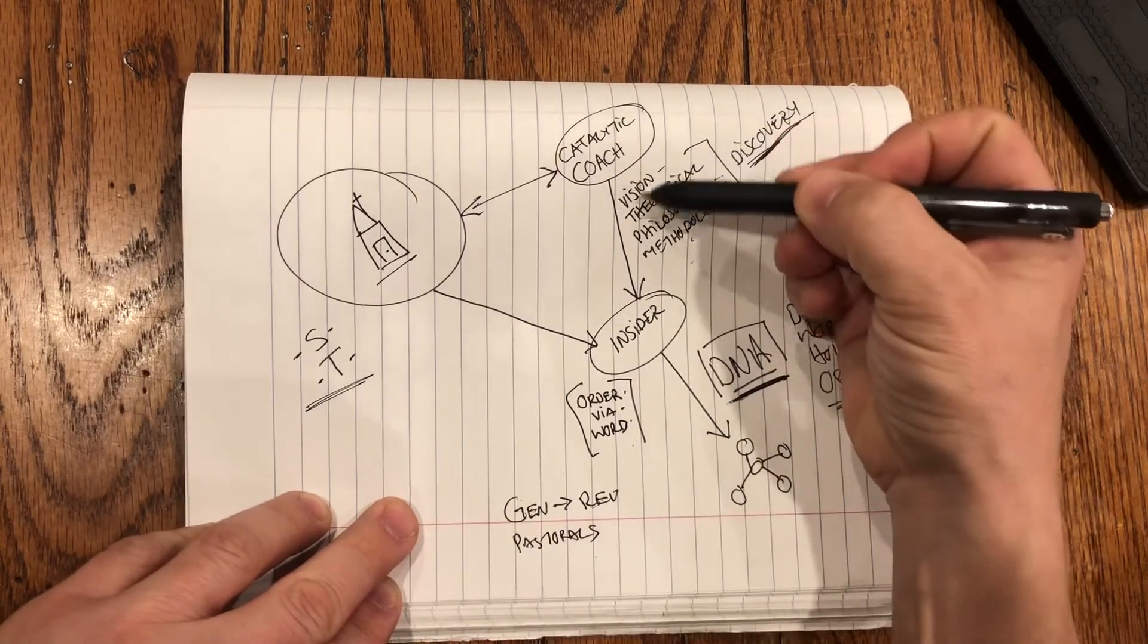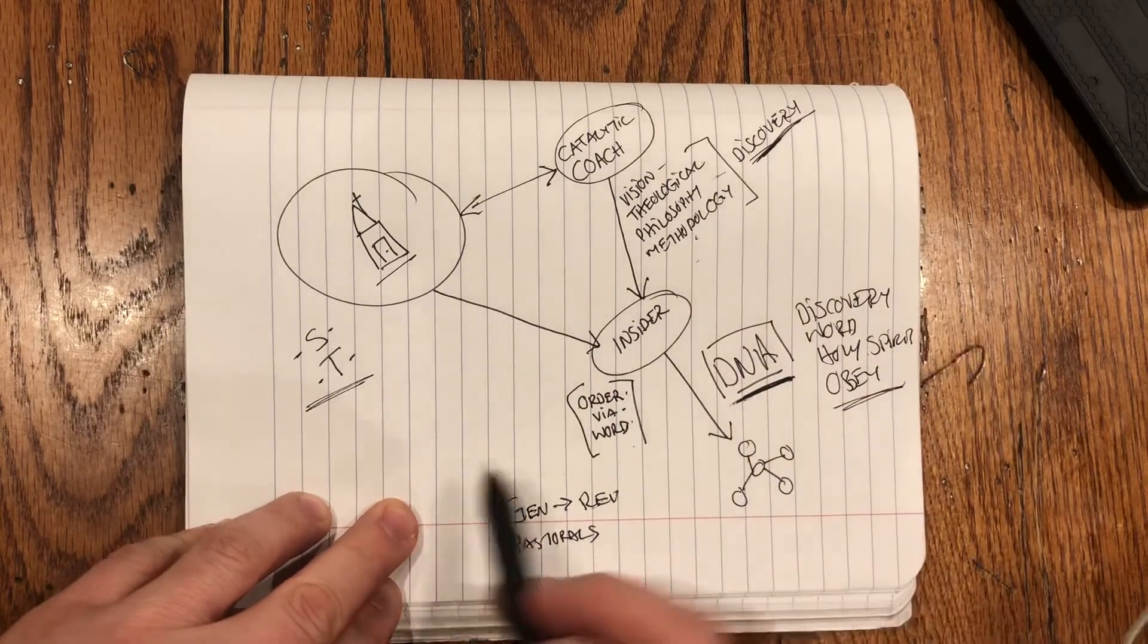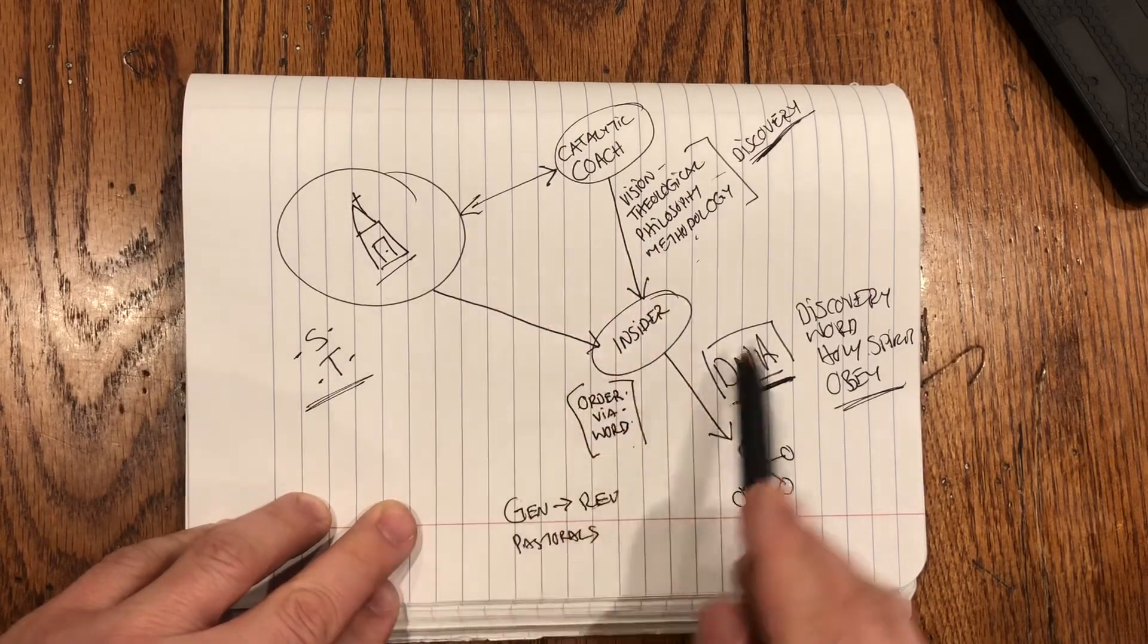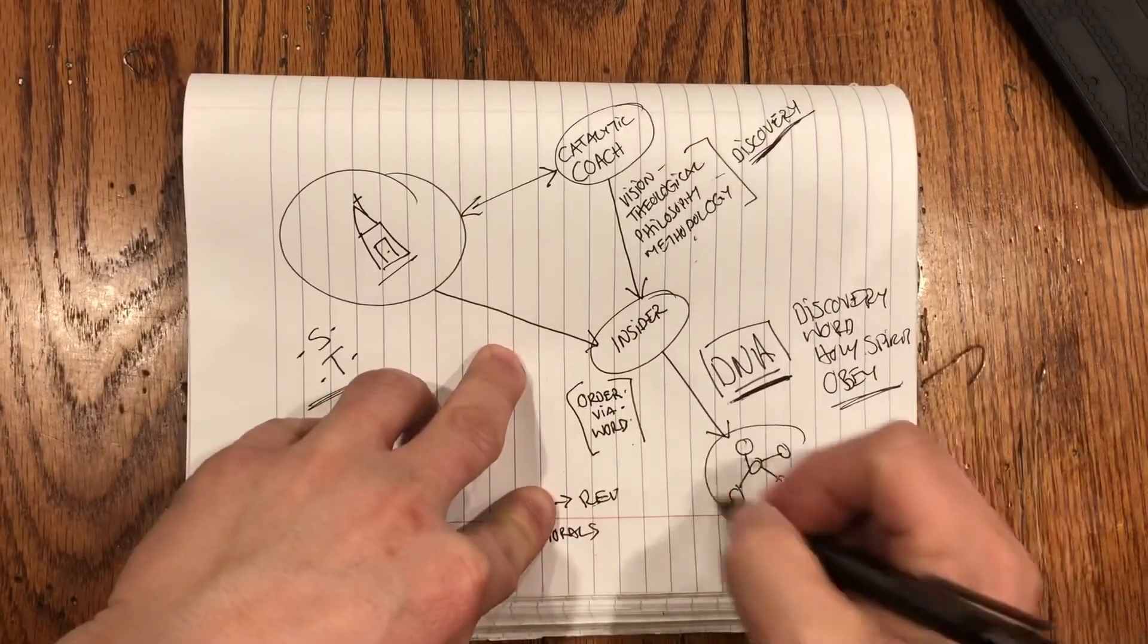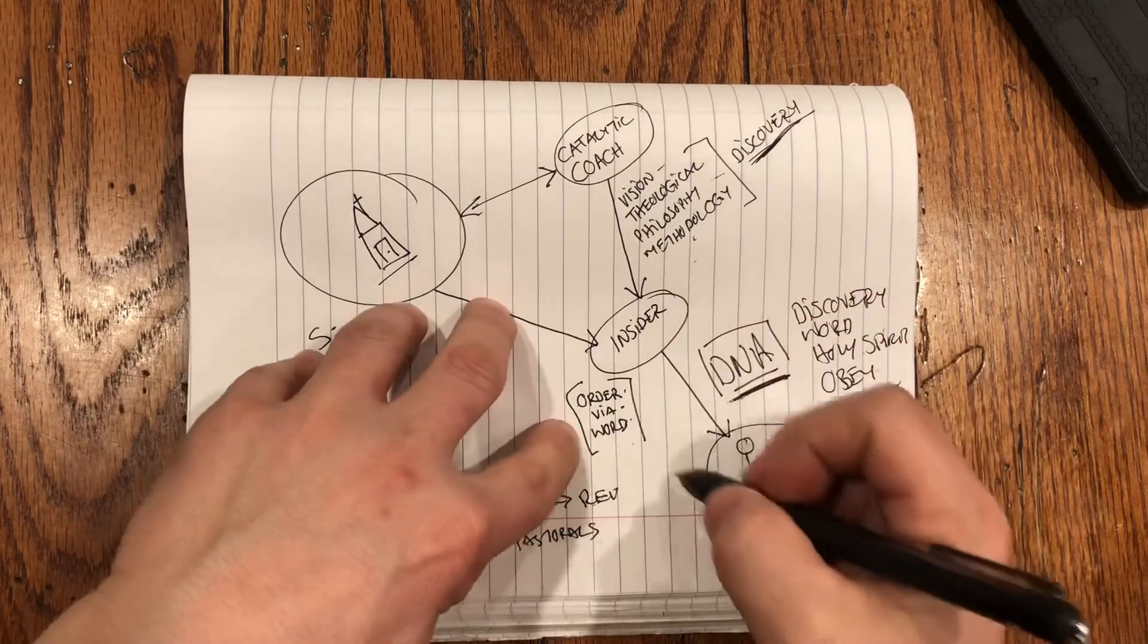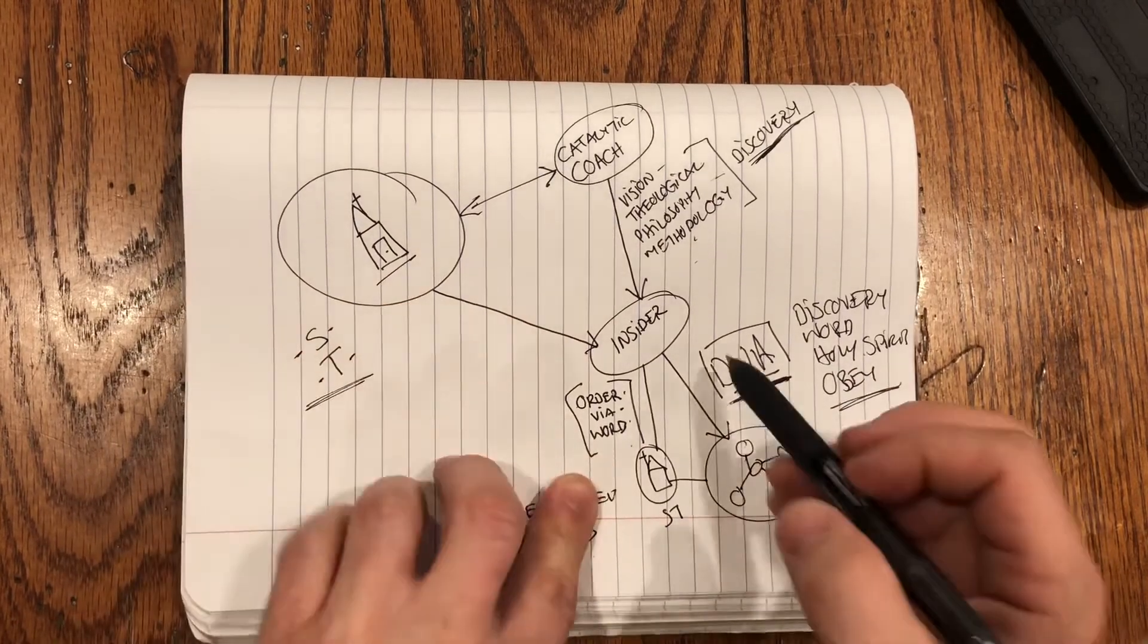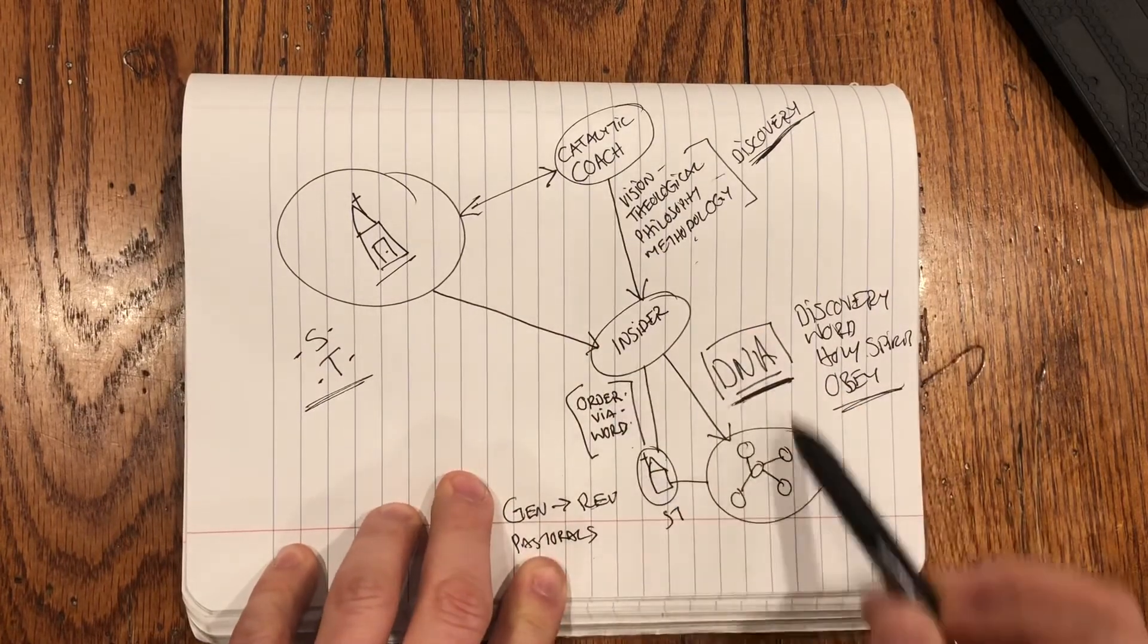And so the catalytic coach is providing that coaching and that vision casting to keep the movement going forward. And the shepherd teachers, as external forces, can provide order via the Word by staying within this framework. And here's a really interesting thing. Eventually, this will become the insider, and the insider will become the coach. And as churches, healthy churches, emerge in these movements, they'll provide the shepherd teaching. And so the point is, eventually, this will go from being an external force to an internal force.